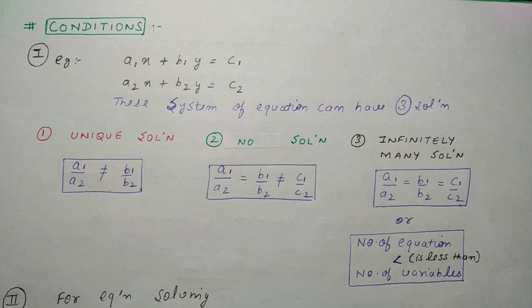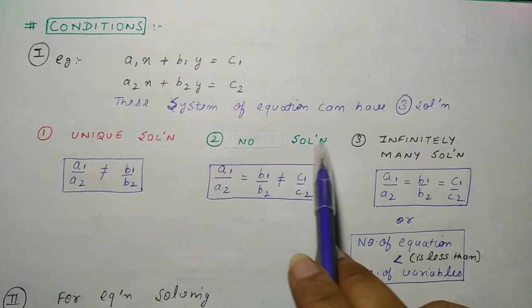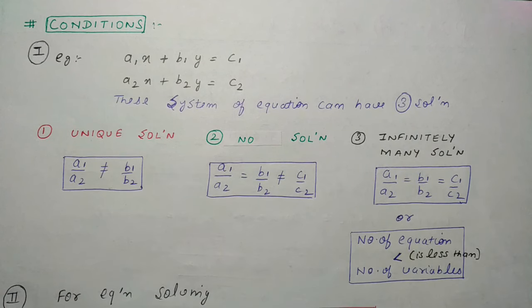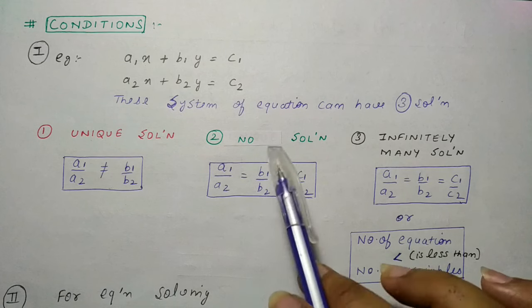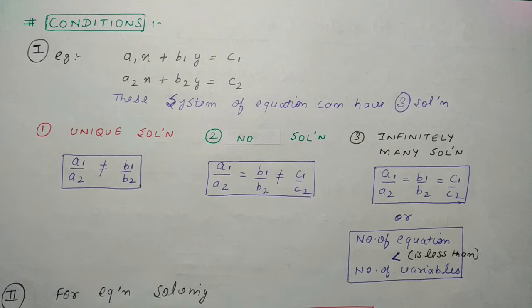अब देखते हैं conditions - कैसे determine करें कि unique solution, infinitely many solution, या no solution में से कौन सा solution आएगा। Suppose करते हैं system of equation: a₁x + b₁y = c₁ और a₂x + b₂y = c₂। Unique solution की condition है: a₁/a₂ ≠ b₁/b₂।